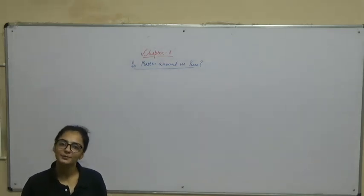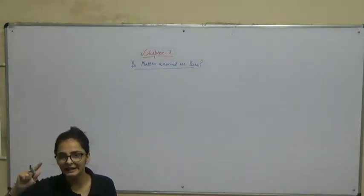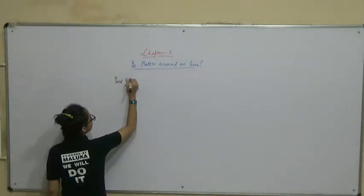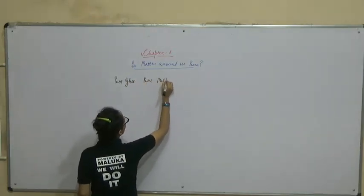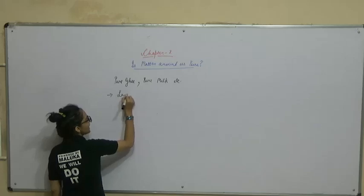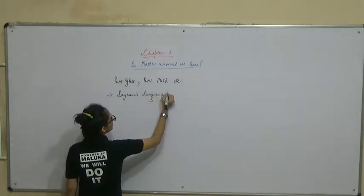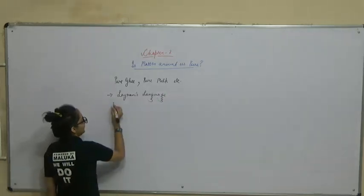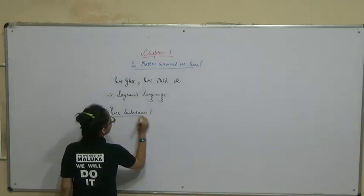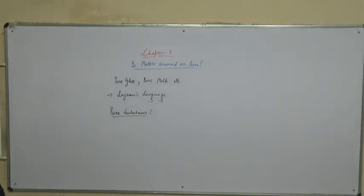This chapter is 'Is Matter Around Us Pure?' We talk about words like pure ghee, pure milk, or pure substances in everyday language. But according to chemistry, what is a pure substance? According to a chemist, a pure substance is something that has all the same constituents with the same properties throughout.